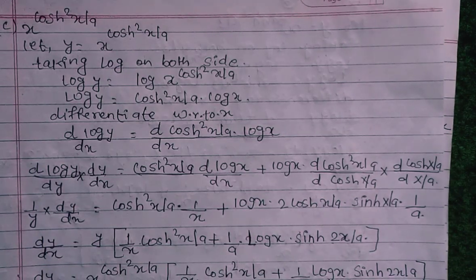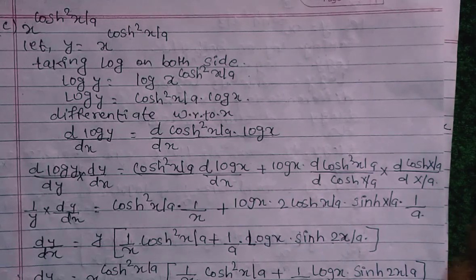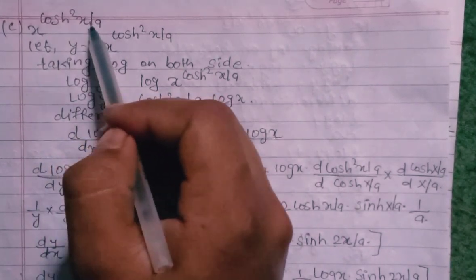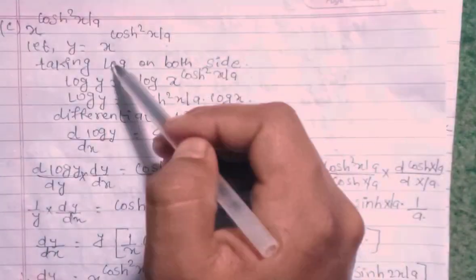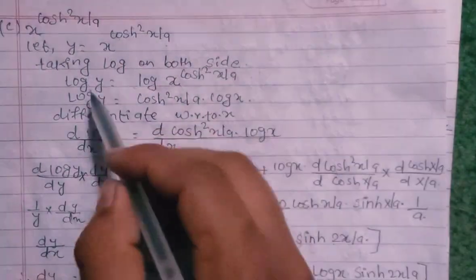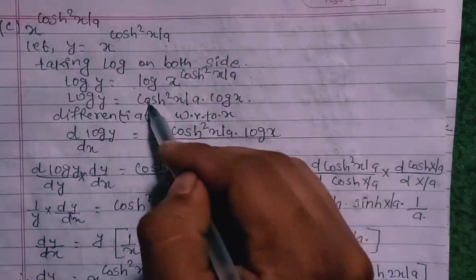The answer process is different here. We will find question C. This is A, B, C, D. We will find the value of Y. Y equals x^(cos(x²/a)). Taking log on both sides: log y equals log x^(cos(x²/a)). So log y equals cos(x²/a) times log x.